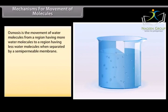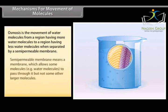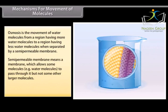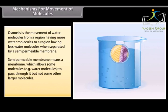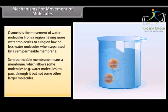Osmosis is the movement of water molecules from a region having more water molecules to a region having less water molecules when separated by a semi-permeable membrane. Semi-permeable membrane means a membrane which allows some molecules, that is water molecules, to pass through it but not some other larger molecules.